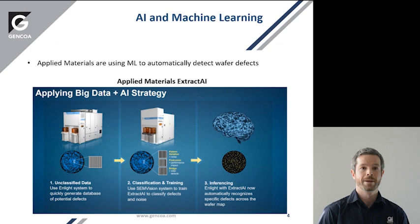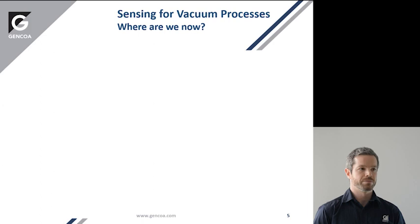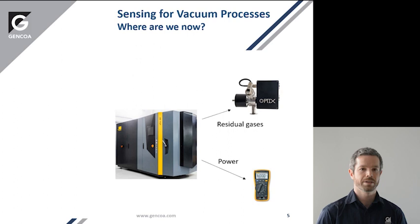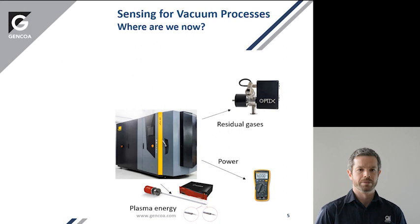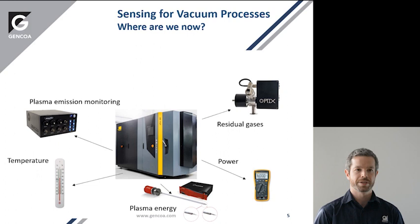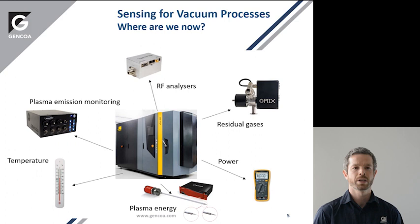Where are we now for vacuum processes in terms of sensing? To do machine learning and AI we need sensory data, and we're in a good position — we have many sensors available on most vacuum systems. You can have residual gas analysis using an optics sensor, information from your power supply in terms of plasma voltage, current, characteristics, and impedance. You can measure plasma characteristics such as electron temperature in situ, temperature at various points within the process, plasma emission characteristics — its light emission — and even analyse harmonics and fundamentals within your RF power signal.